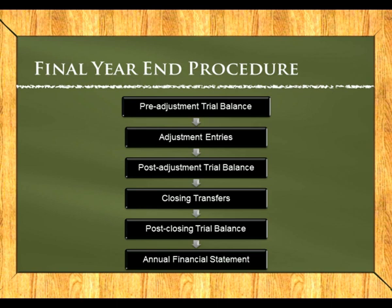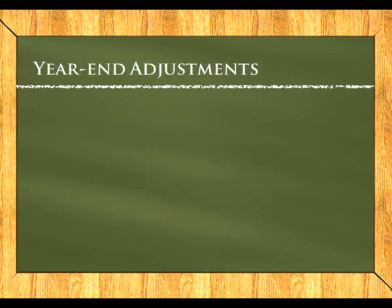After that we deal with adjustment entries, then prepare a post-adjustment trial balance to check we are still correct. We then process our closing transfers and do a post-closing trial balance. The post-closing trial balance does not have a nominal section because we have closed everything off to the balance sheet section.